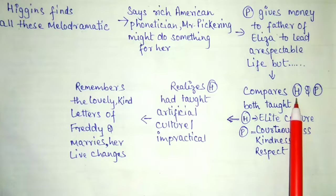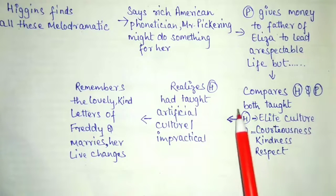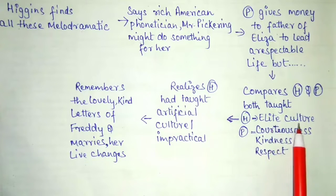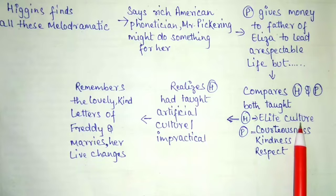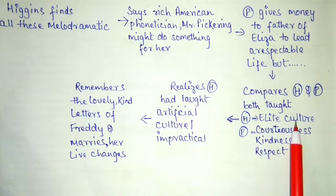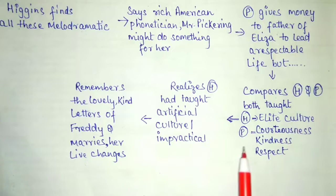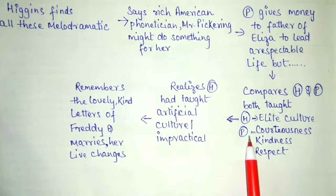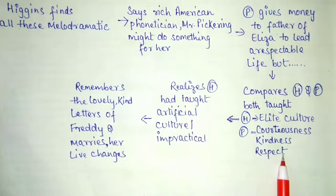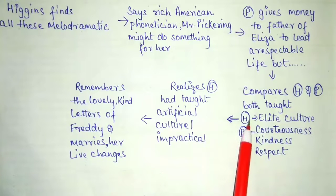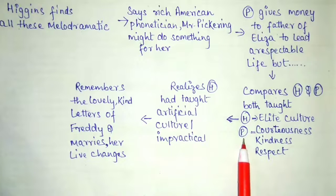Eliza, who had become extremely angry, compares the mannerism of Higgins and Pickering. Both taught Eliza lessons: Higgins taught her to be elite — polished manners, mannerism, behavior, and talking etiquettes — but all these were impractical. Pickering, on the other hand, indirectly taught her courteousness, kindness, and respect.